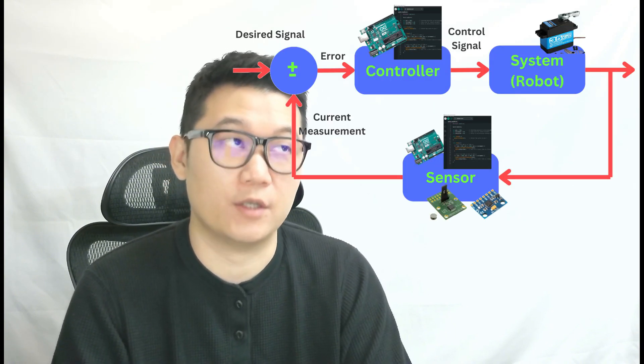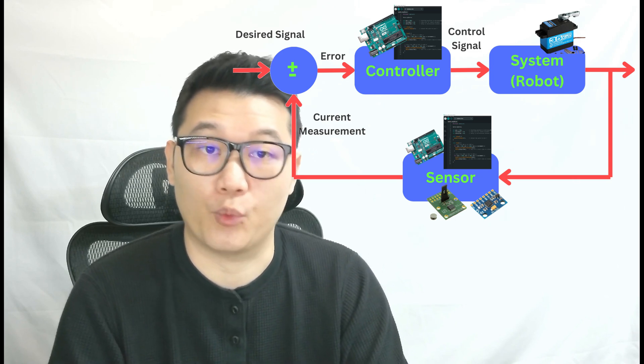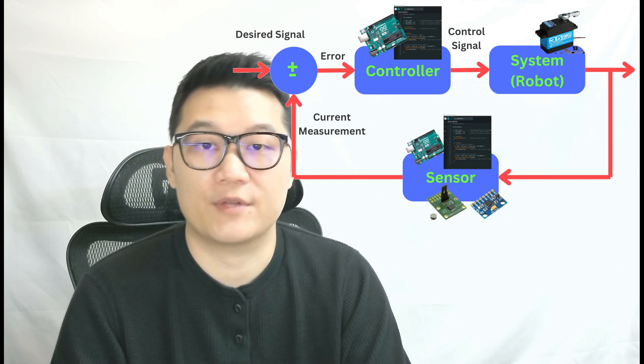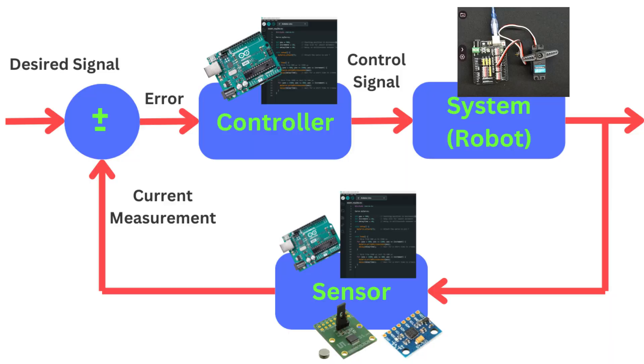The information from these sensors is then fed into an error block where it's compared to the desired signal by subtracting it from the measured values. For example, if your target position of the robot is defined in X, Y, Z coordinates, that's the desired signal. It's called a signal because it can be updated in real-time based on higher-level commands, such as a decision-making process. Next, the error data is sent to the control block, where the steering wheel angle will be calculated. This produces a control signal that drives the servo motor, and then the sensors measure the robot's states again, and the loop goes on.